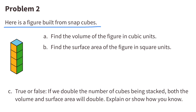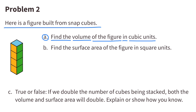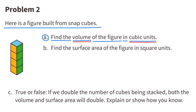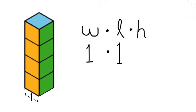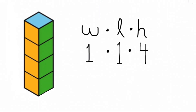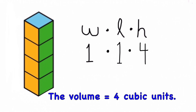Number two: here's a figure built from snap cubes. A: find the volume of the figure in cubic units. We don't know if these are inch cubes or centimeter cubes, but we know they're cubes, so we'll call them unit cubes. We can tell just by looking that there are four cubes, so the answer is four cubic units. We can also multiply width times length times height: one times one times four equals four cubic units.